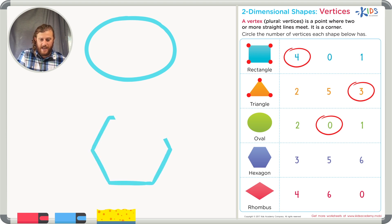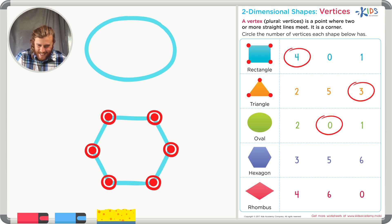Our fourth example is a hexagon. Do you know how many sides a hexagon has? If you don't, it's okay. You can count them. You can do the same for the vertices. For this worksheet, let's focus on the corners or the vertices. Let's count the corners. One, two, three, four, five, and six. I think there's six corners or six vertices.